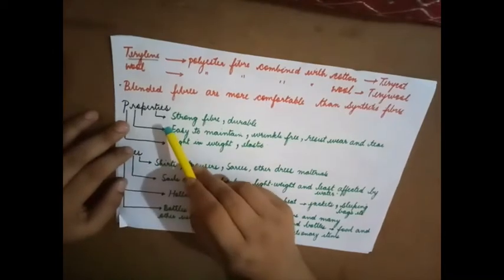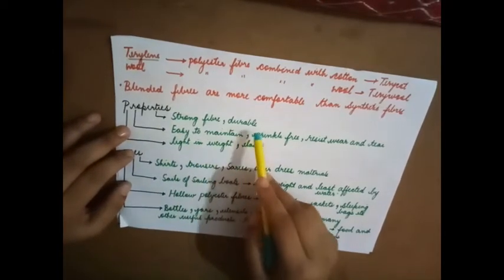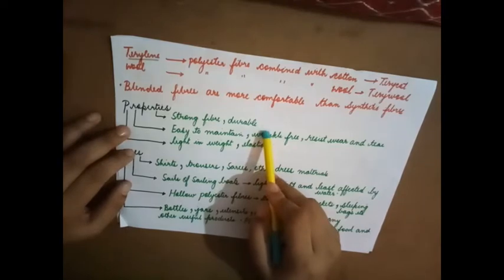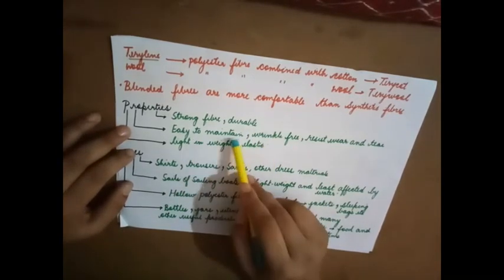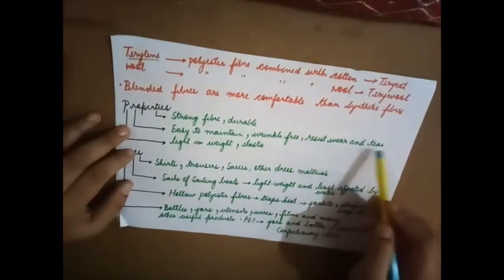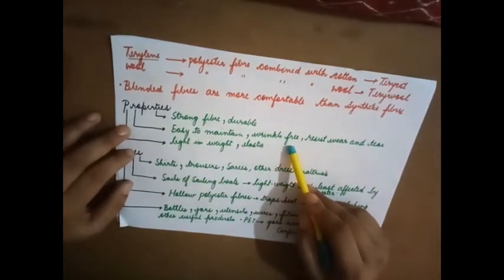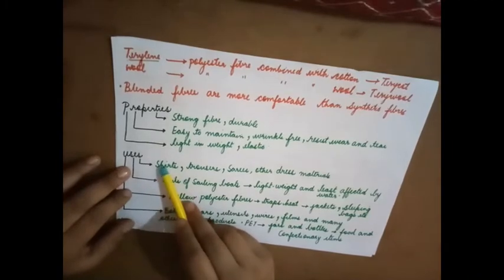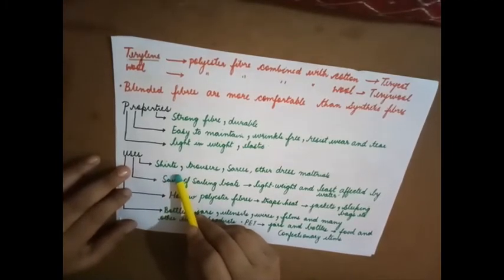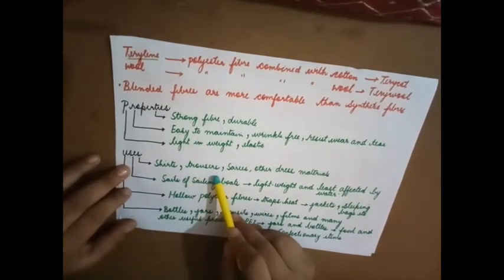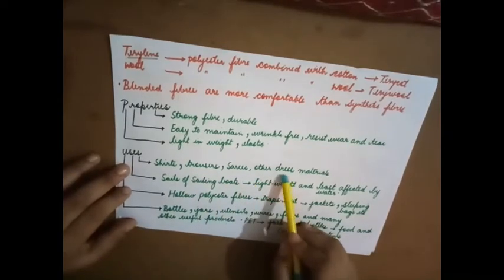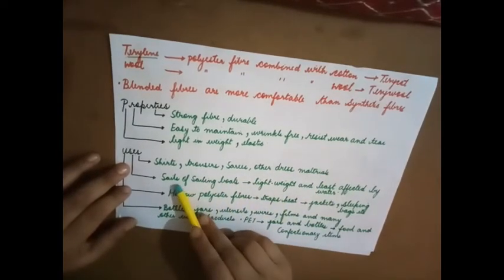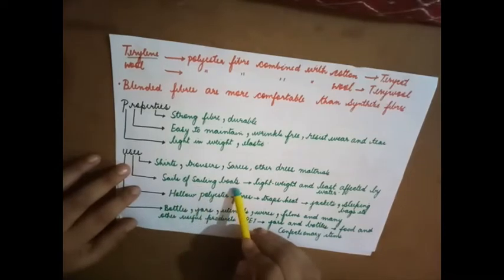Properties: They are strong fibers and durable. Durable means it lasts for a very long period of time. It is easy to maintain, wrinkle-free, resists wear and tear, so it does not require much ironing. It is light in weight and elastic. Uses: It is used in making shirts, trousers or pants, sarees, and other dress materials. They are used in the sails of sailing boats.